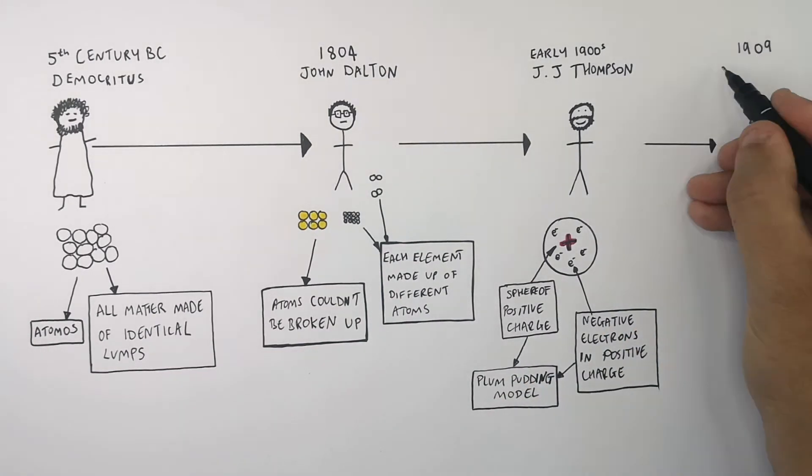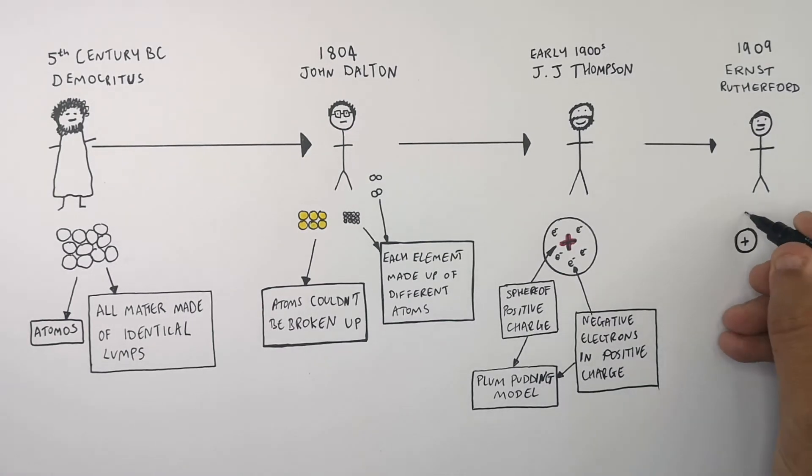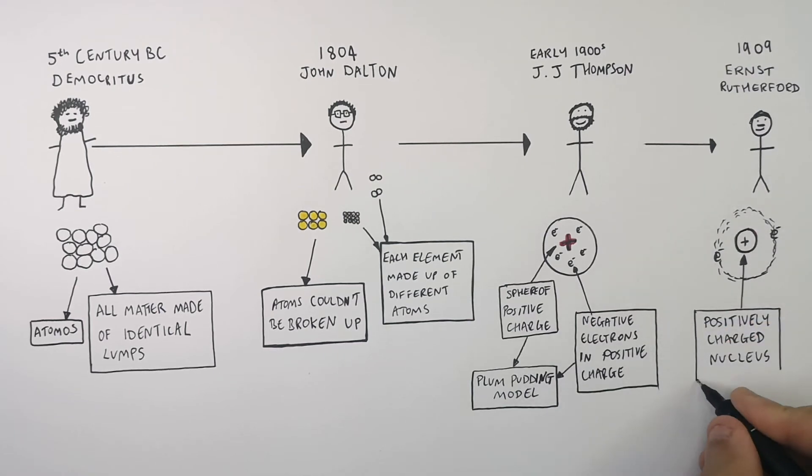In 1909 Ernest Rutherford discovered that the atom actually had a positively charged nucleus. So all atoms had positively charged nuclei and electrons surrounded the positively charged nuclei. Ernest Rutherford in 1909 discovered that the nucleus was a positively charged nucleus and this is the model of the atom that we still use today.